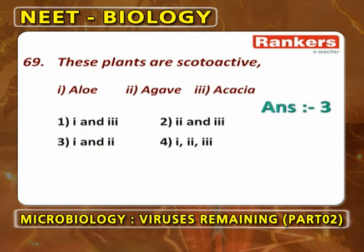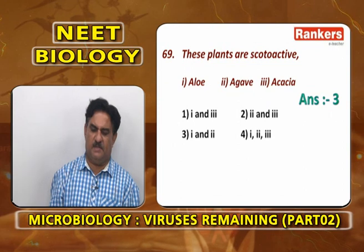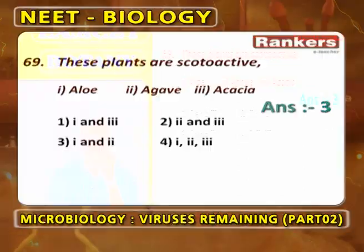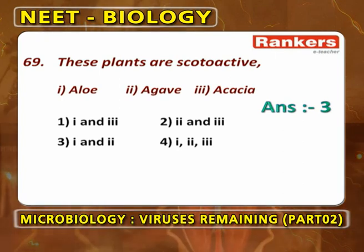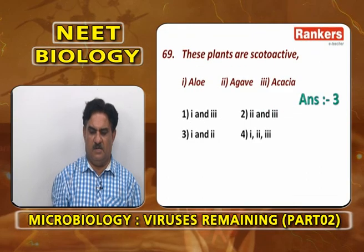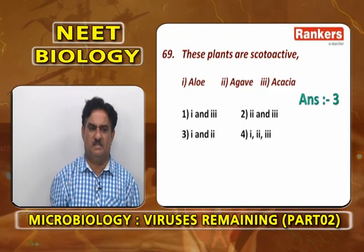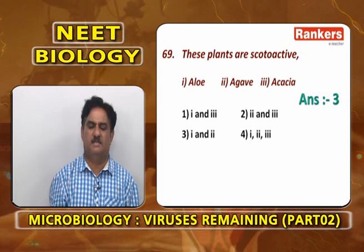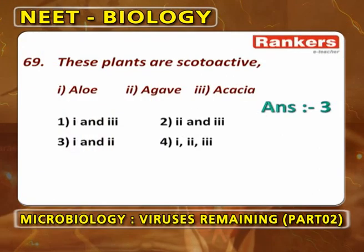Scotoactive stomata — stomata that open during night and close during day — are found in all succulent xerophytic plants and many xerophytic plants: aloe, agave, acacia. All three show scotoactive stomata. Answer is 1, 2, 3.